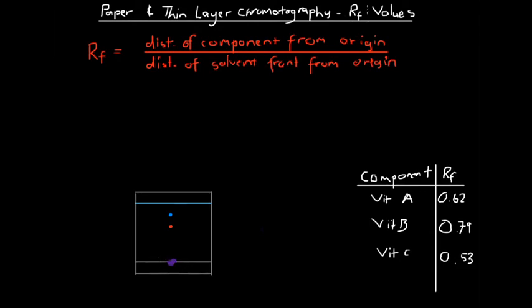Another way to identify if a certain substance is contained in a mixture is to use RF values. An RF value is a value that we attach to one spot or one component obtained from a chromatogram. For example, if we look at this red spot here, we can calculate its RF value, or retardation factor, which is what RF stands for.